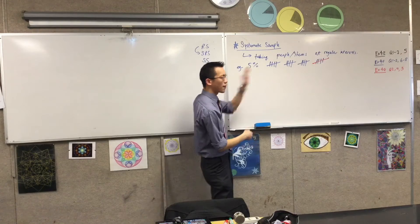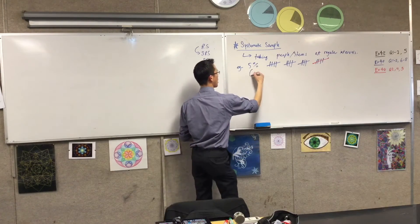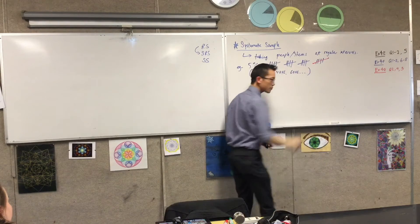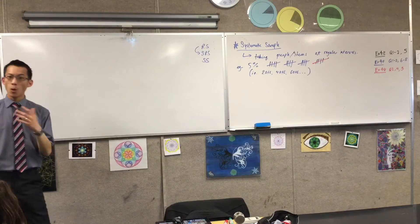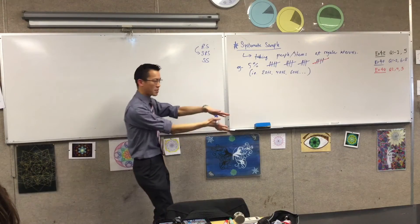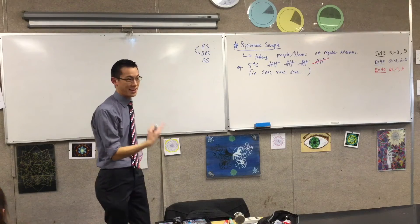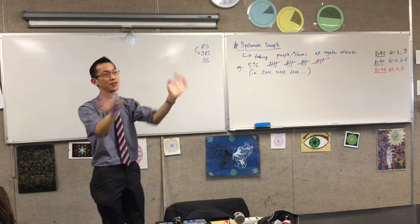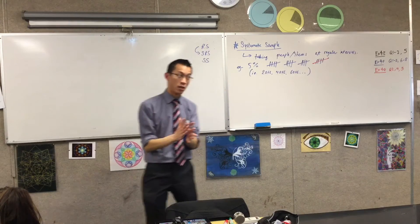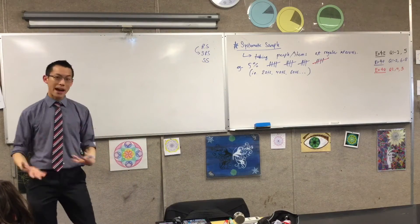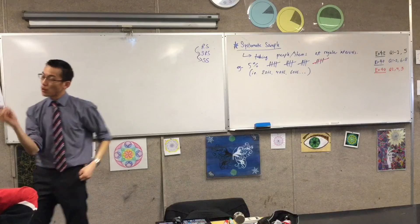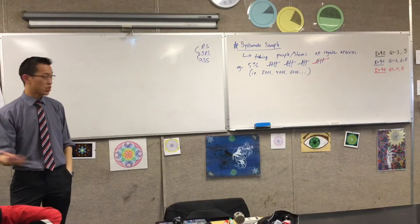Then person number 40, then person number 60. The advantage of this is I don't need to know anything about these people beforehand. And if I do this all day, I will get an equal cross-section of breakfast, lunch, and dinner. I won't get a bias because I only got people who wake up early. I'm getting a cross-section across the entire day with no prior knowledge about what these people are like. So despite going from random to progressively more structured and predictable, all these methods are trying to get equal representation.